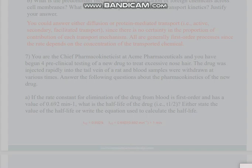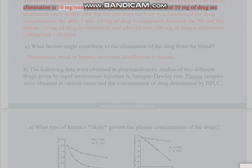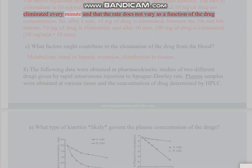Part B: If the rate constant is zero-order with a value of 10 mg per minute, how much of the drug has been eliminated after one minute? How much of the drug is eliminated between the fifth and sixth minutes after injection? How much drug is eliminated after 10 minutes? The above equations help to understand the nature of zero-order kinetics. The rate of elimination is 10 mg per minute. Zero-order kinetics dictates that 10 mg of drug are eliminated every minute and that the rate does not vary as a function of the drug concentration.